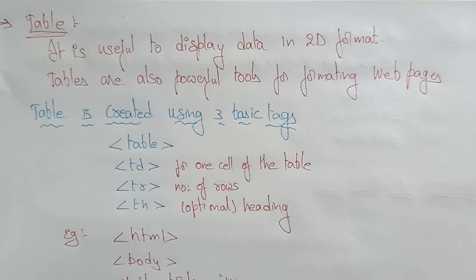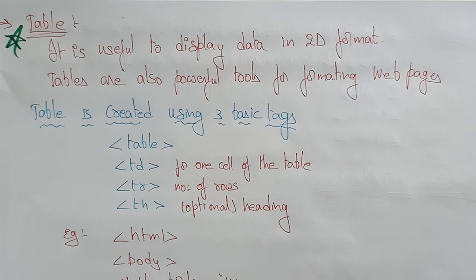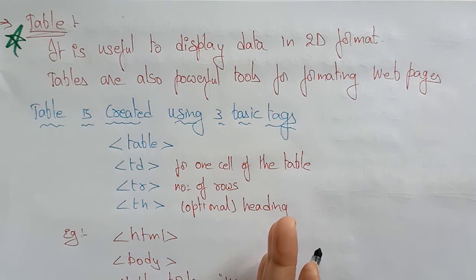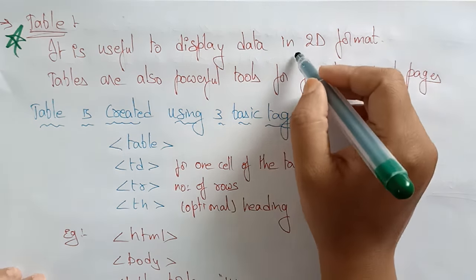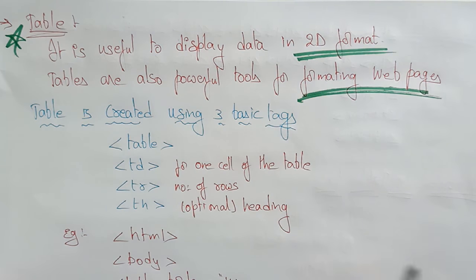Hi students, let's continue with HTML tags. The type of tag is the table tag. This is one of the important concept tags that you need to know, because if you want to represent any data in the form of a table, you need to know this concept. Otherwise, you can't print a web page with a table format. It is useful to display data in 2D format. Tables are also powerful tools for formatting the web page.